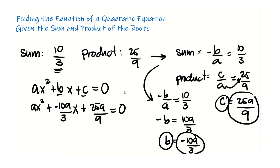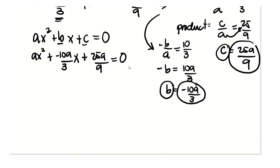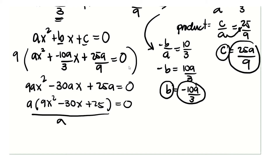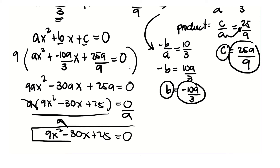The next step is to simplify this equation. Multiply both sides by 9. You have 9ax squared, then 9 times negative 10a over 3 will be minus 30a, and then 25a over 9 times 9 would be plus 25a, equals 0. Factor out the a, and you get 9x squared minus 30x plus 25 equal to 0. Divide both sides by a, and that gives you 9x squared minus 30x plus 25 equal to 0. That is the equation that you need.